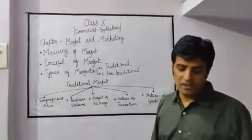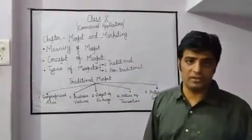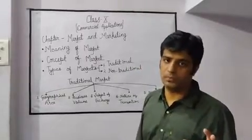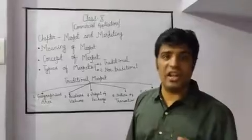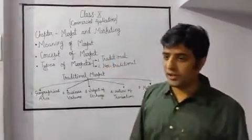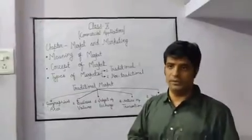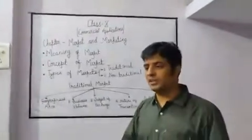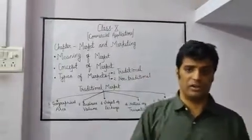First concept is place concept. Place concept means a location or a place where goods are being sold and purchased. Second is area concept. Area concept means a geographical area where the potential customers are meeting. Third is demand concept. Demand concept means aggregate demands of goods and services.